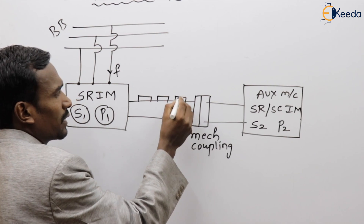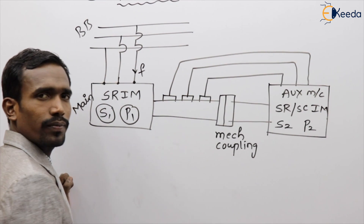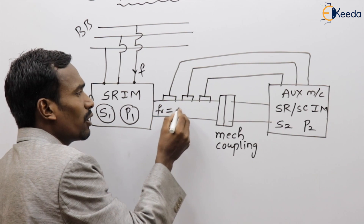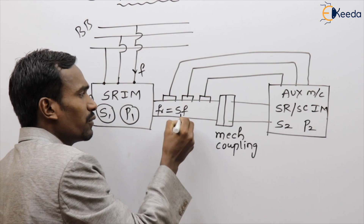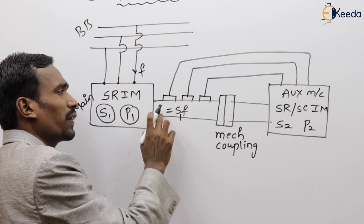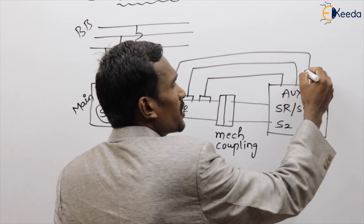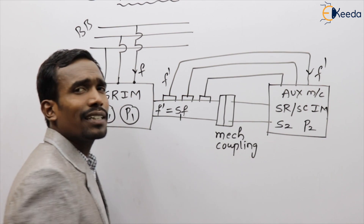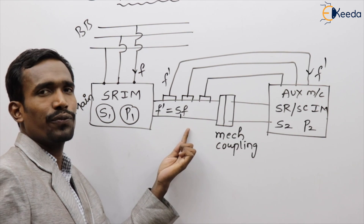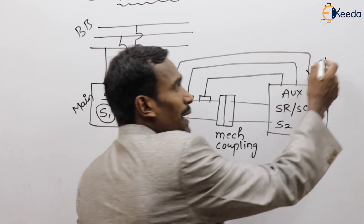The main machine has slip rings, and these slip rings supply power to the auxiliary machine. The rotor frequency of the main machine is F dash, which equals S1 × F. This rotor frequency F dash becomes the supply frequency of the auxiliary machine.